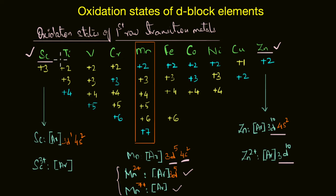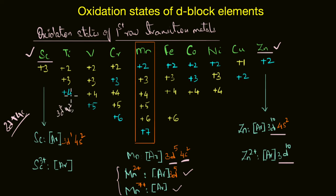In the +7 state, manganese acquires the noble gas configuration — both preferred because they result in stable states. Observing the oxidation states from scandium to manganese, the maximum oxidation state corresponds to the sum of electrons present in the 3d and 4s orbitals. For example, titanium has the outer electronic configuration 3d²4s², so its maximum oxidation state is +4. Similarly, for vanadium, chromium, and manganese, the highest oxidation state corresponds to the sum of electrons in both orbitals.